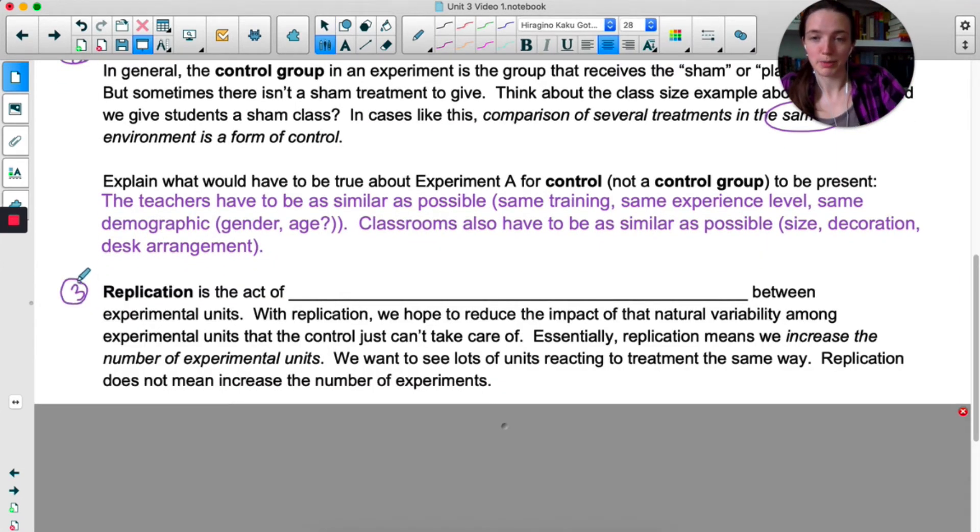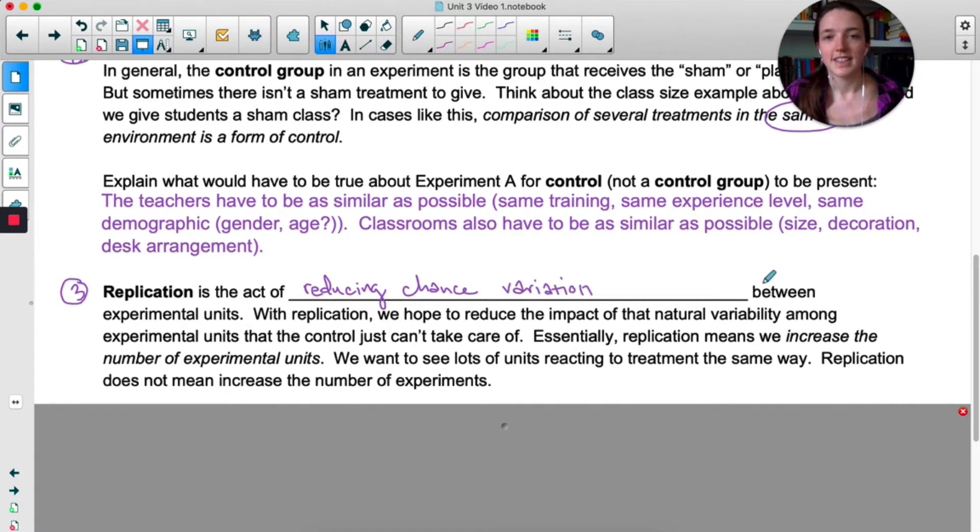The third principle of experimental design is replication. And this is the act of reducing chance variation between experimental units. With replication we want to reduce the natural variability that will happen no matter how controlled the experiment is. So even if we manage to find three teachers that are virtually identical and three classrooms that are virtually identical, those kids are going to be different. So basically with replication what we want to do is increase the number of experimental units as much as possible, which is just going to decrease that chance variation between the different experimental units.